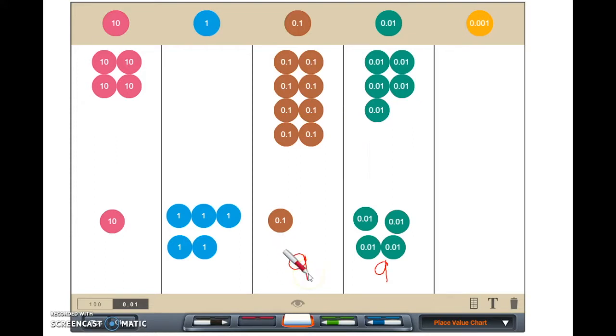We will repeat the process with the rest of our place values. One, two, three, four, five, five ones. And finally, one, two, three, four, five, five tens.